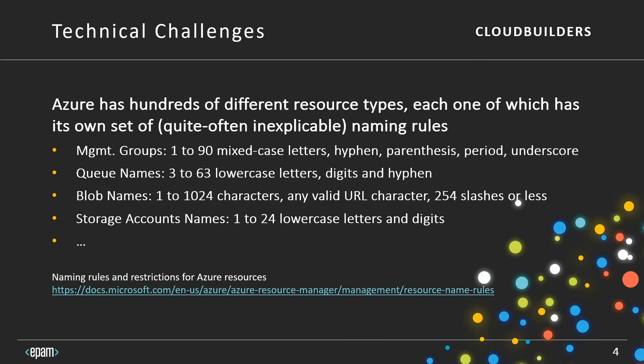There are a bunch of technical challenges for starters. Azure has hundreds of different resource types, each with its own set of often inexplicable naming rules. Management groups allow letters, hyphens, and parentheses, but storage accounts are lowercase letters and digits only — no dash, no underscore, no period. Queue names are lowercase only. Blob names are mixed characters. The rules are very complex. Click on that link if you want to find more about the naming rules — there are hundreds of them.